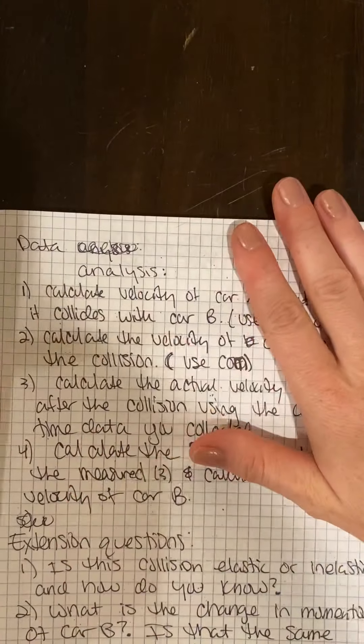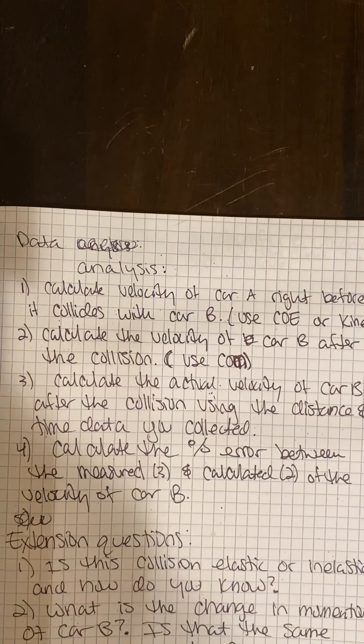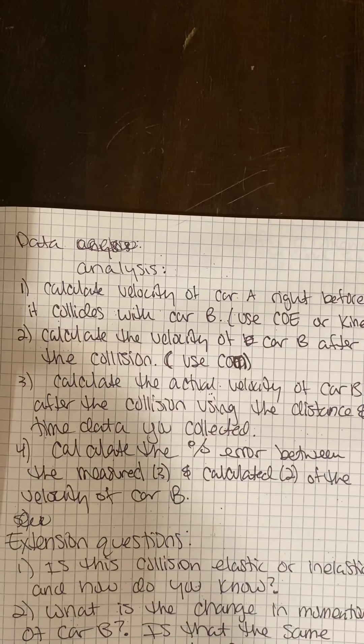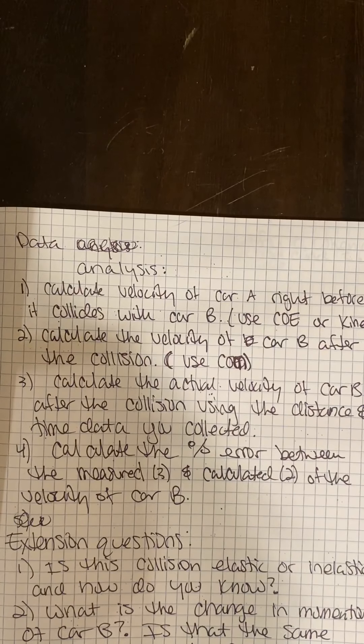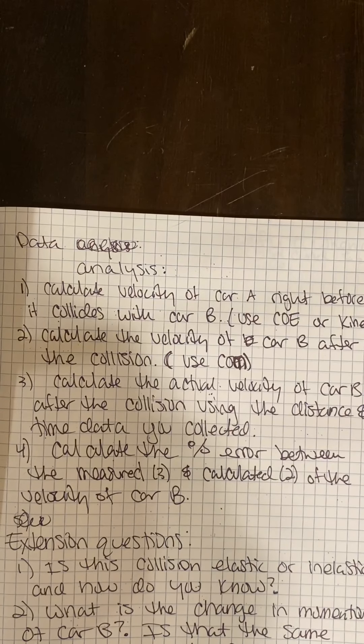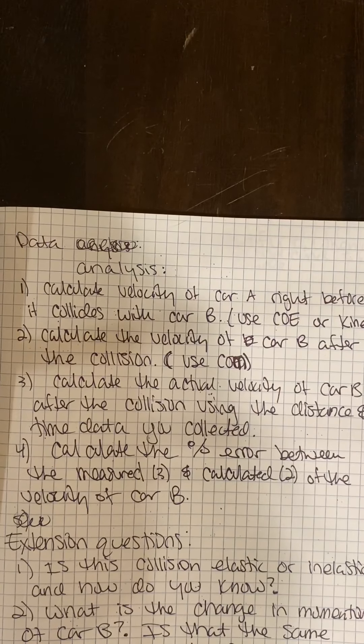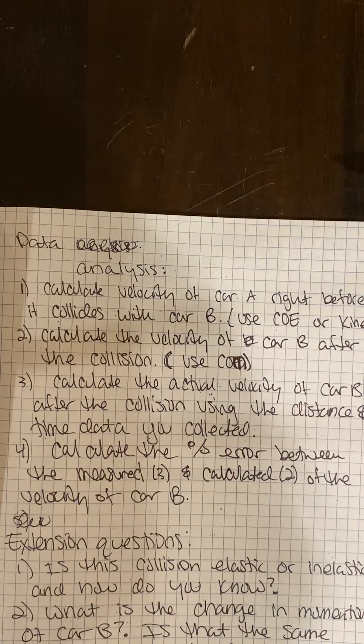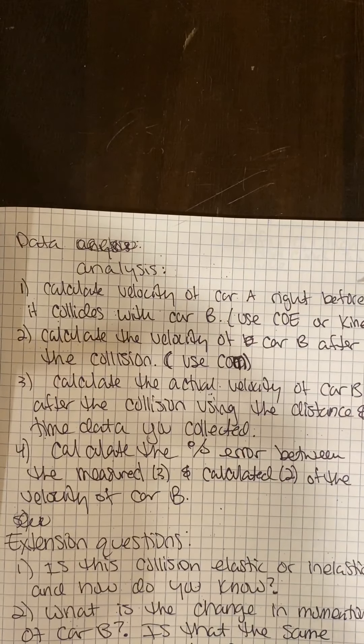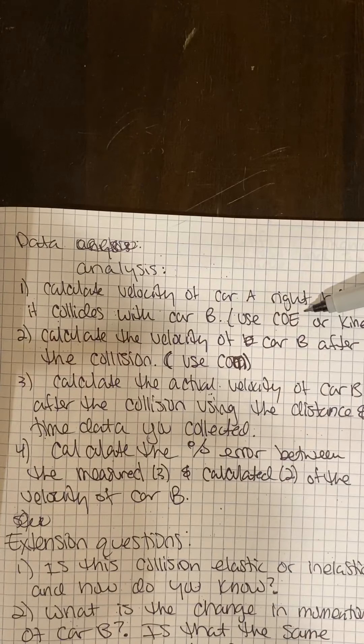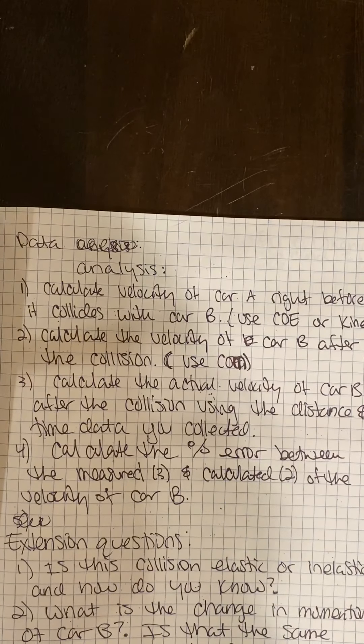What you're going to be calculating is the velocity of car A right before it collides with car B. So car A started with some gravitational potential energy. It is going along the horizontal part of the track with just kinetic energy. And you can use conservation of energy to find the velocity of car A right before it collides with car B. Or you can use your kinematics.